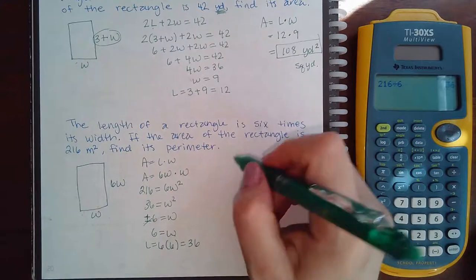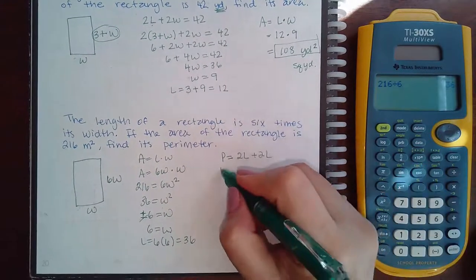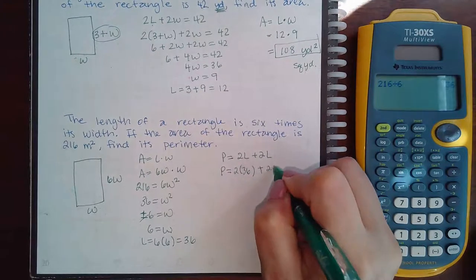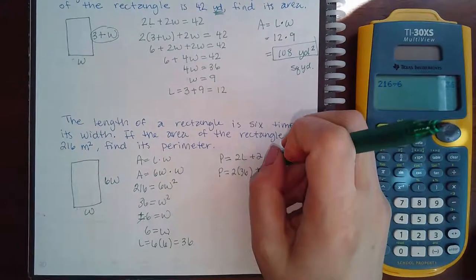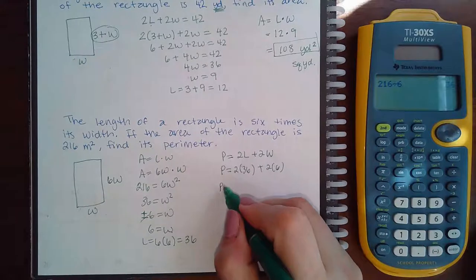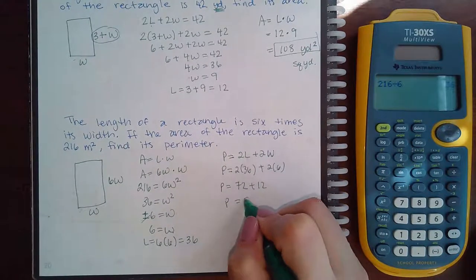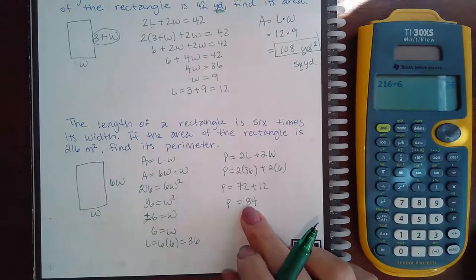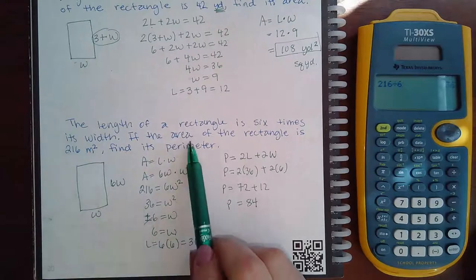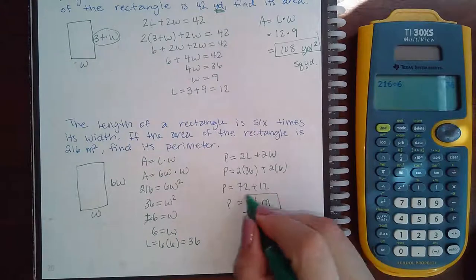So then how do we find the perimeter? Perimeter is equal to 2L plus 2W. So my perimeter is going to be 2 times 36, plus 2 times 6. So then I get P equals 72 plus 12. So the perimeter equals 84. Now remember, perimeter is in regular units, area is in square units. So the area is meters squared, which means my perimeter will be just meters.